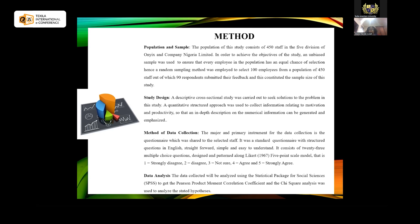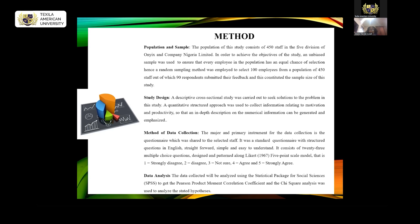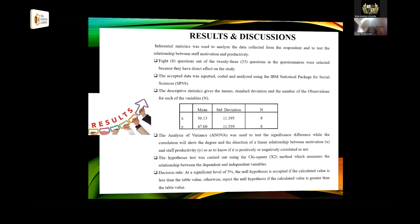The questionnaire was designed along Likert's 1966 five-point scale model, ranging from number one — strongly disagree — to number five — strongly agree. The collected data were analyzed using the statistical package for social sciences to get the Pearson product moment correlation coefficient, while the chi-square method was used to analyze the stated hypotheses.